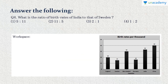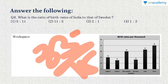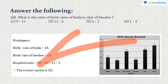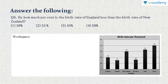Question 4: What is the ratio of birth rates of India to that of Sweden? India is 33 and Sweden is 15. The ratio 33:15 simplifies to 11:5. Option 2.